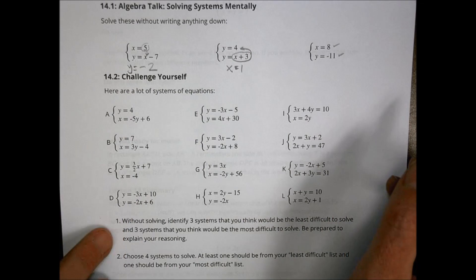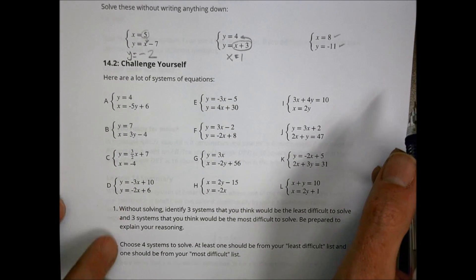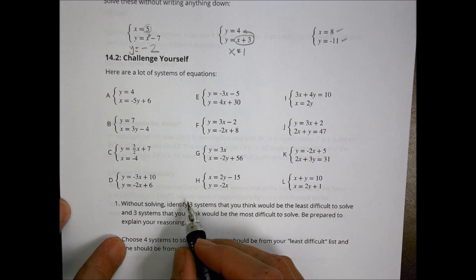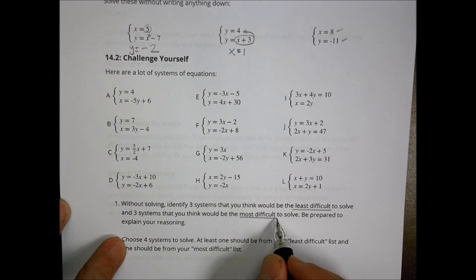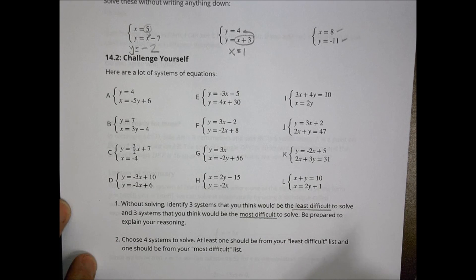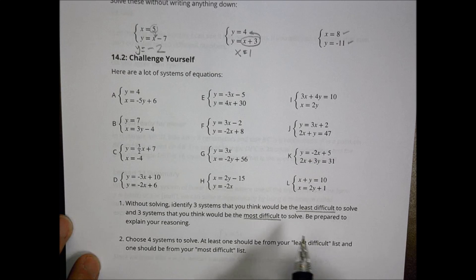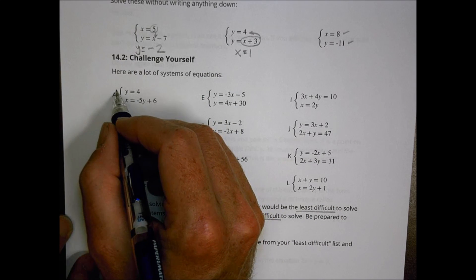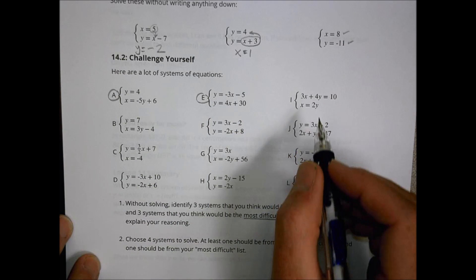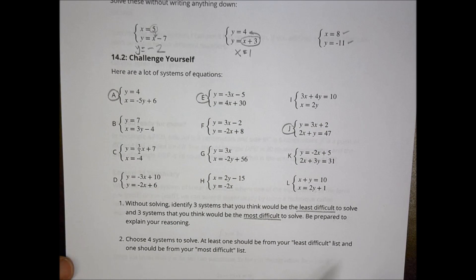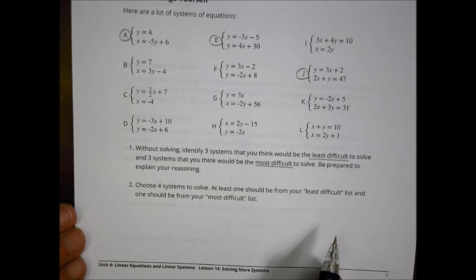Here are a lot of systems of equations in section 2. It says, without solving, identify three systems you think would be the least difficult to solve, and three you think would be the most difficult, and then be prepared to explain your reasoning. And then it says to choose 4 to solve that you want to do. I'm going to go ahead real quick, and I'm going to solve A, E, and J.